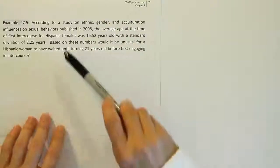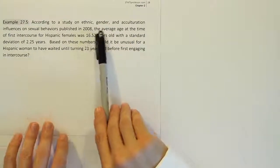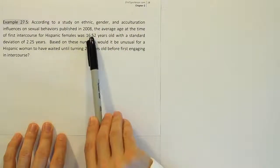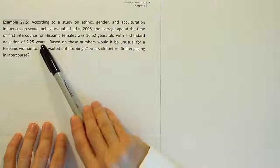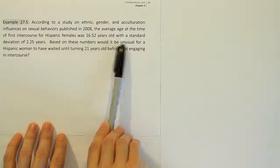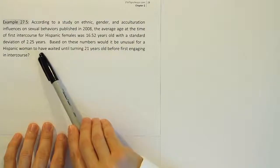Example 27.5. According to a study on ethnic, gender, and acculturation influences on sexual behaviors published in 2008, the average age at the time of first intercourse for Hispanic females was 16.52 years old with a standard deviation of 2.25 years.